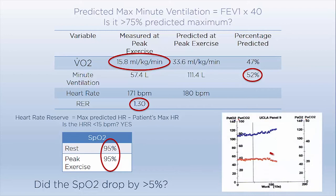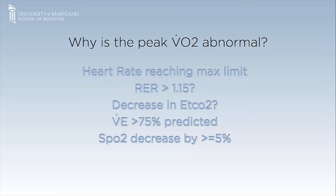Putting it all together, why is the peak V̇O2 abnormal in this case? The SpO2 did not decrease by greater than 5%. The minute ventilation did not reach the maximum limit. Heart rate did reach its maximum limit. Respiratory exchange ratio increased above 1.15 and the end-tidal carbon dioxide did start decreasing. Thus, the cause of exercise limitation is cardiovascular.